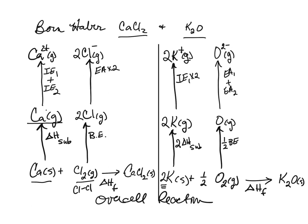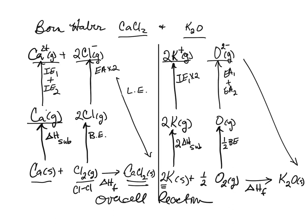Once I have formed those ions, they come together and turn into the ionic compound. That by definition is the lattice energy — the energy released when you form a mole of an ionic compound from their ions. We started with the ions and turned them into a mole of the ionic compound. On the right-hand side it's the same thing: starting with our ions and turning them into a mole of K₂O, which by definition is the lattice energy.